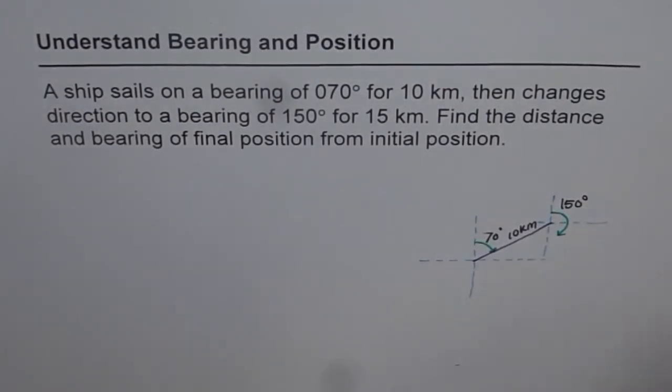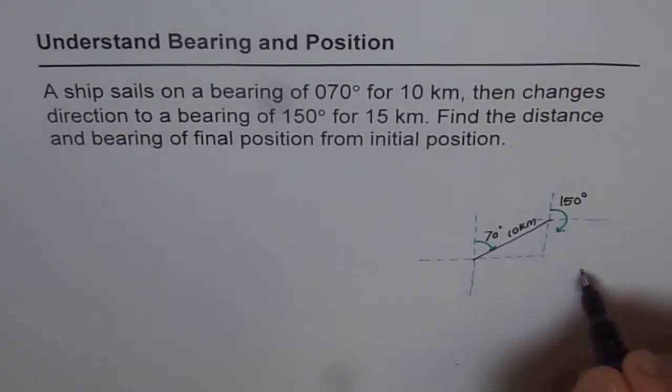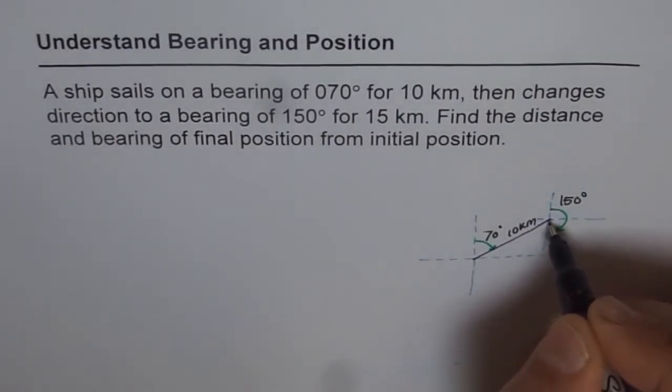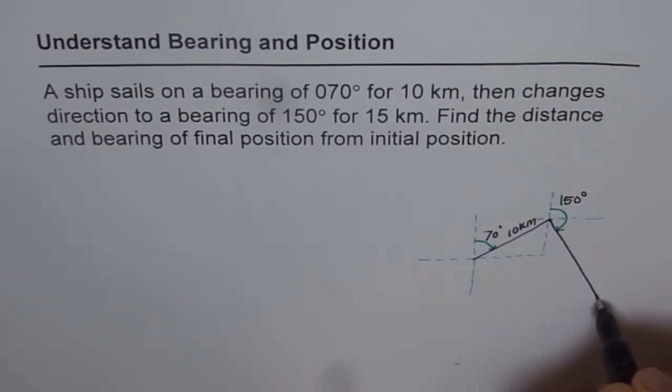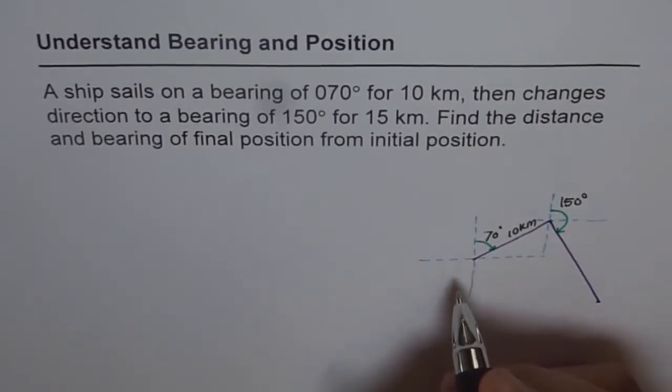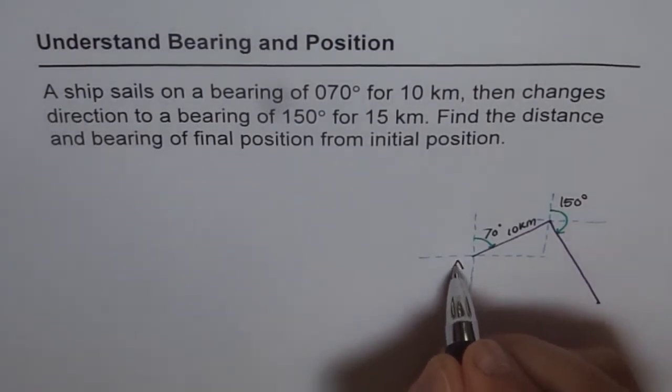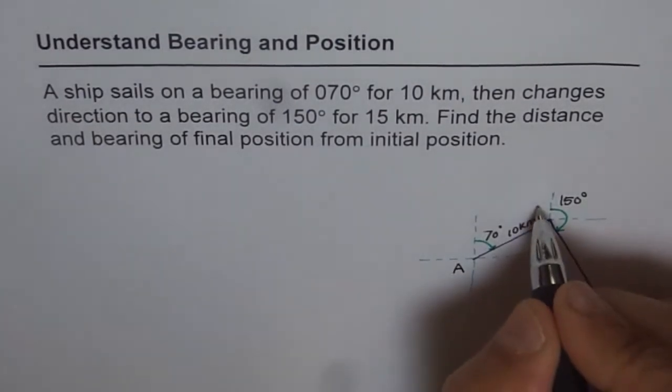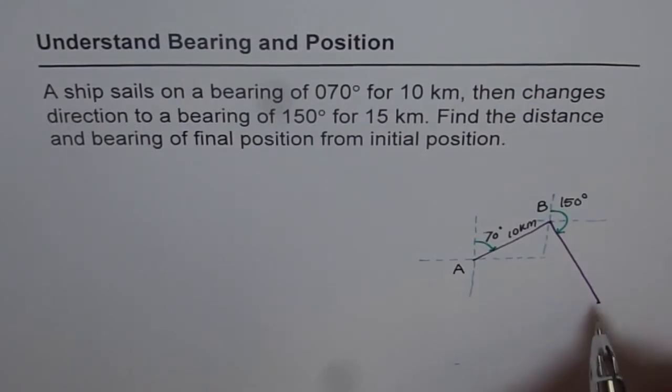And now the direction has been changed and the ship moves in this direction for 15 kilometers. That means a line which is slightly longer than this, one and a half times this. So let us approximately draw it. Let us say this is our line, and that is the final position. I hope you understand how we have sketched it. So let us say the original position is A, and then we have position B from where the ship changes the direction and lands at point C. So this is your final position.